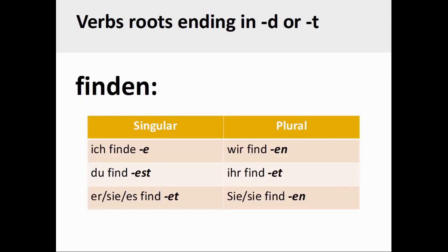Instead, with the addition of the extra E, we have a very pronounceable verb conjugation pattern: ich finde, du findest, er/sie/es findet, wir finden, ihr findet, sie finden.